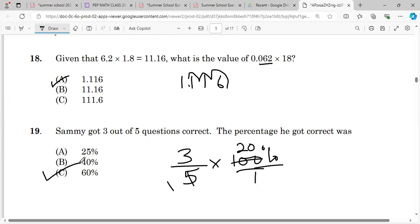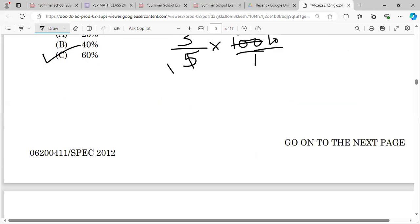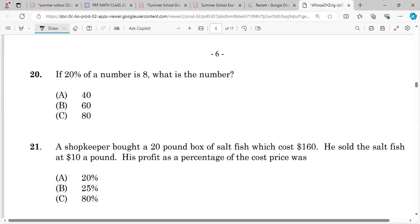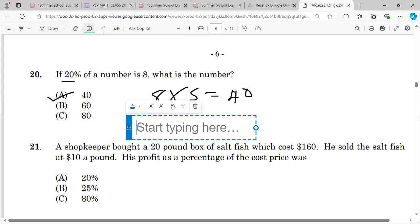And we are on to the final one for this paper. Please guys, ensure that you are subscribed. If you follow me on TikTok, you can get our videos. Number 20 says if 20% of a number is 8, what is the number? 20% of any number is basically dividing the number by 5. So what we can do is 8 times 5, which is 40. So our answer would be 40.